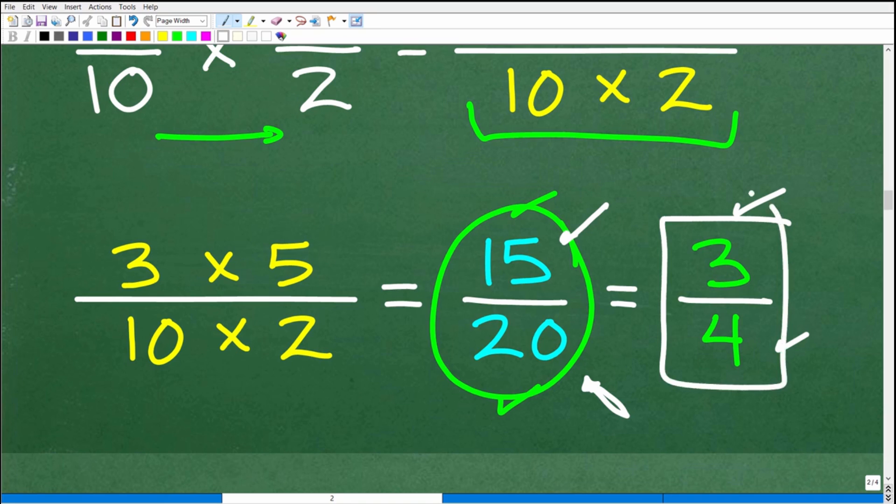So here, you can see that 5 goes into 15 3 times and 5 goes into 20 4 times. So 3 fourths is that fraction simplified. Now, let's see this in action a little bit more here. 15 over 20.